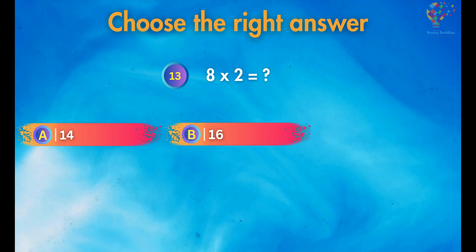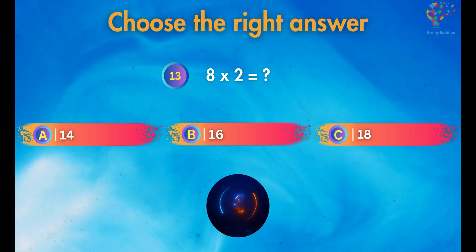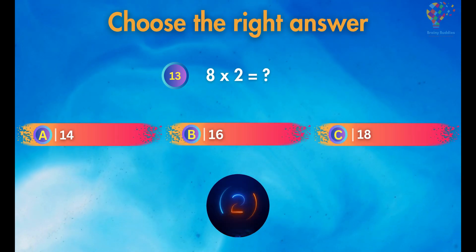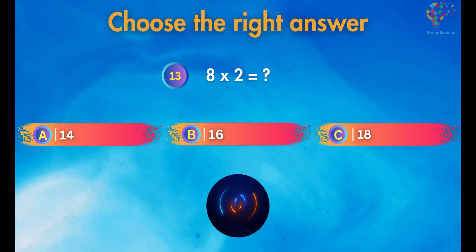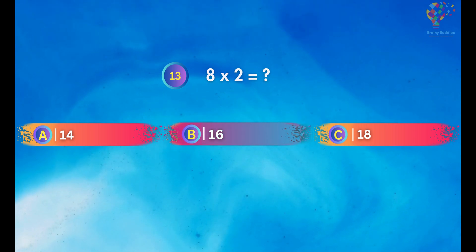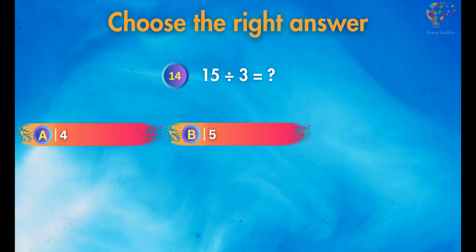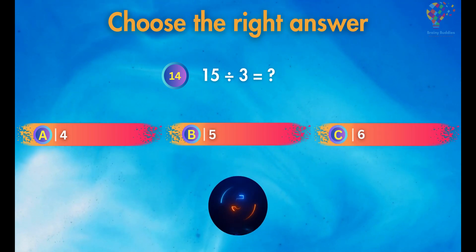8 times 2 is equal to 16. 15 divided by 3 equals 5.